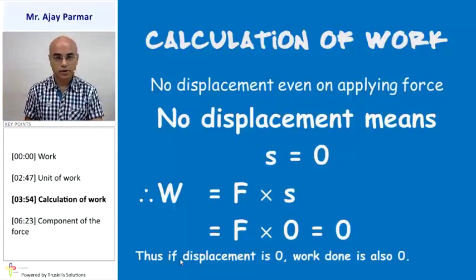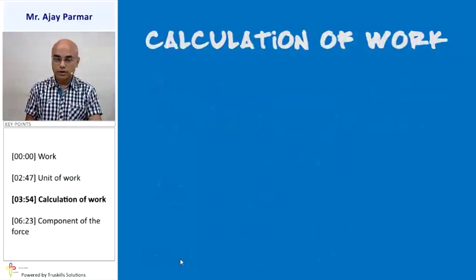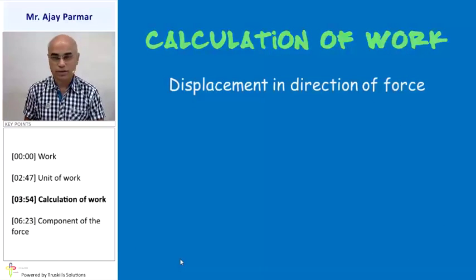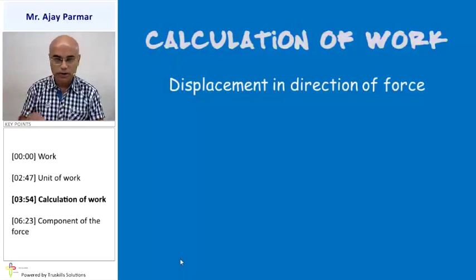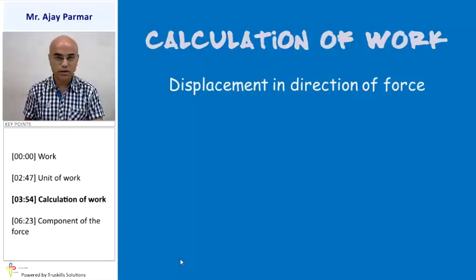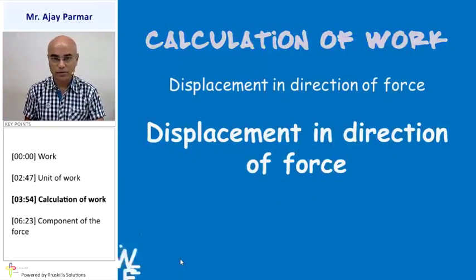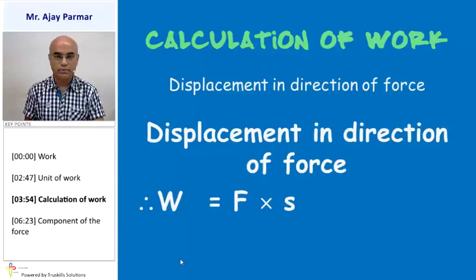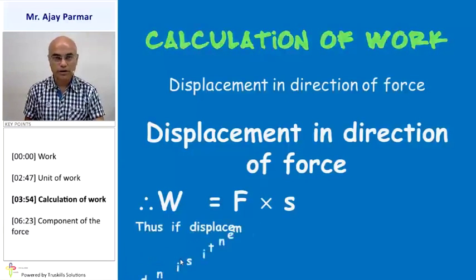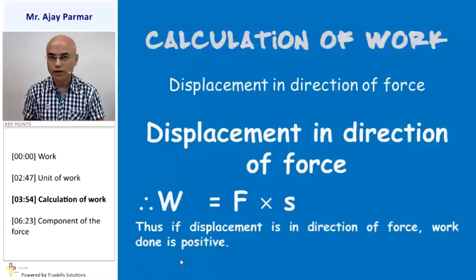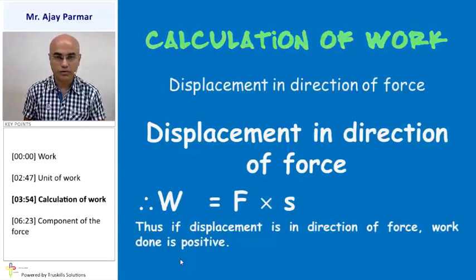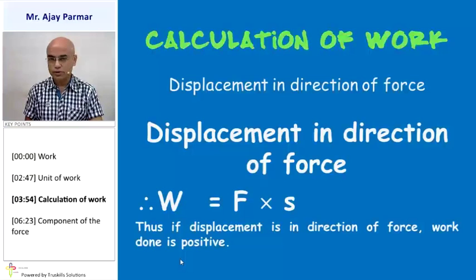Suppose the displacement takes place in the direction of the force — for example, a pen lying on a bench is pushed and displaces along the direction of the force. Then W = F × S, and in this case the work done on that object will be a positive value.